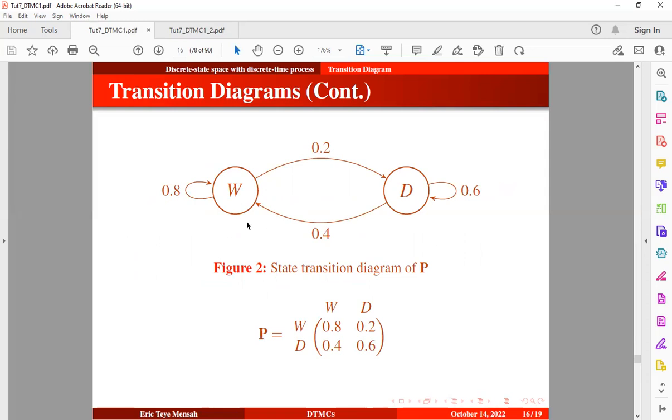So we can see the transition from wet day to itself, wet day to itself, 0.8, and that's what we have here. And this is the transition from wet day to dry day, which is 0.2, and the transition from dry day to wet day is 0.4, so dry day to wet day is 0.4, and dry day to dry day is 0.6, and that's what we have here.